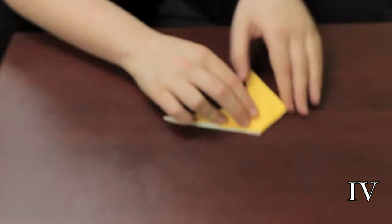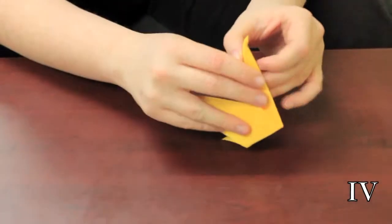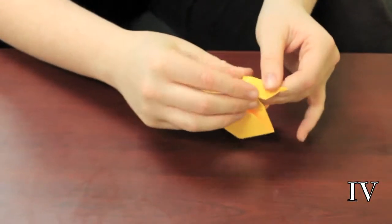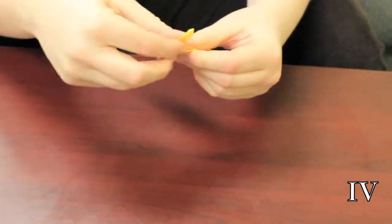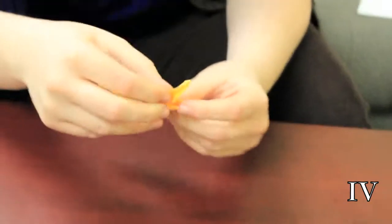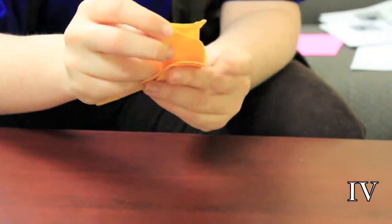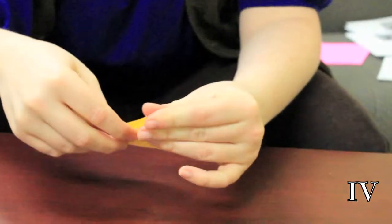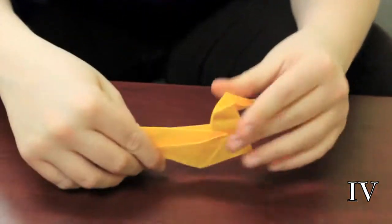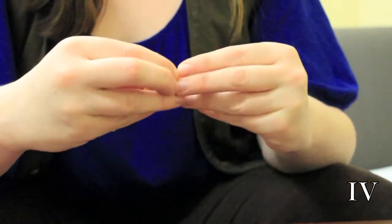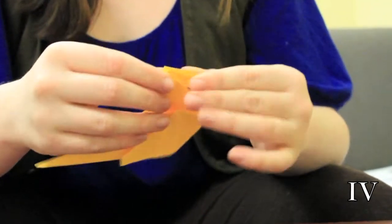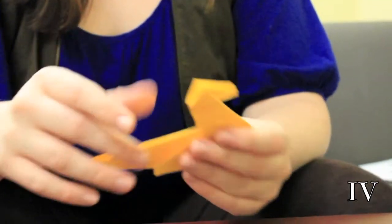From there you do an inverted fold to create the head. So you have your head right there. If you want it to look a little more horse-like, you can fold it in a little bit so that it looks a little more square.